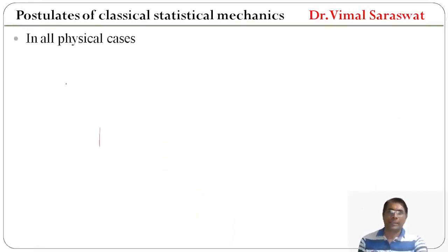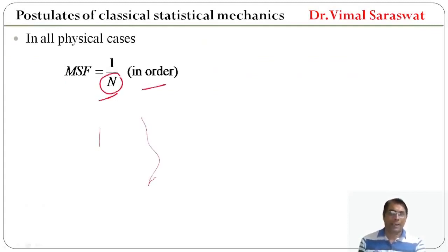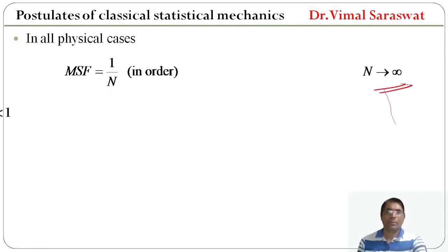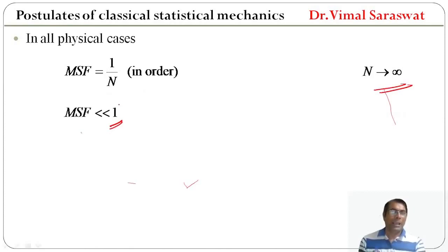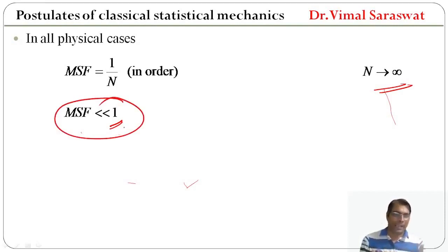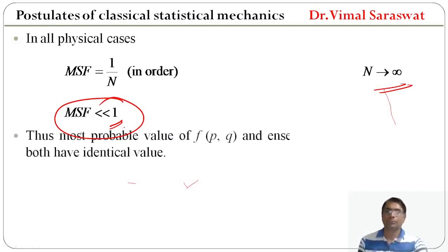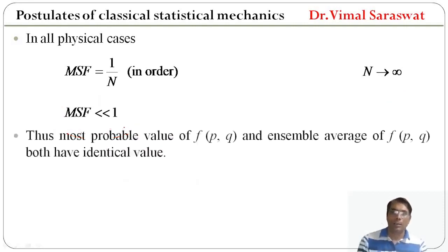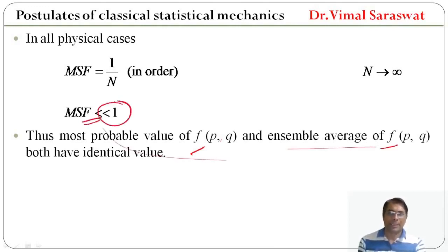In all physical cases, mean square fluctuation is of the order of 1/N. Since N is very large and tends to infinity, the mean square fluctuation is very much less than one. Therefore there is no difference in the result obtained from the ensemble average and the most probable value — both have identical values because mean square fluctuation is negligible.